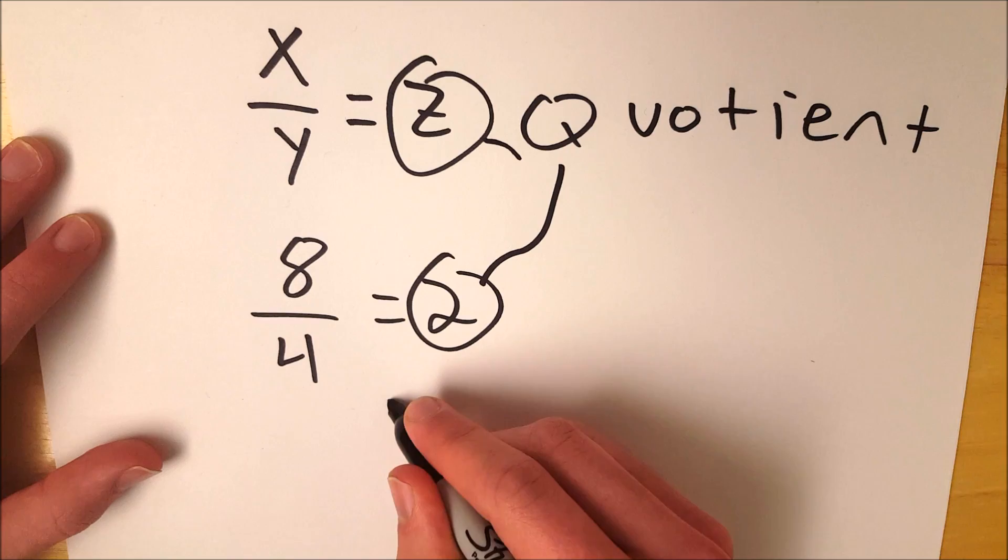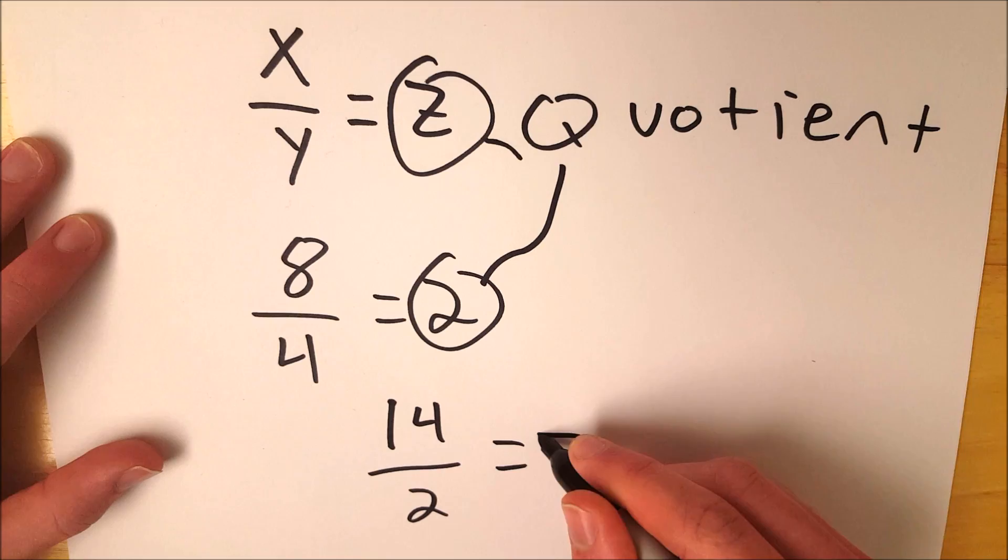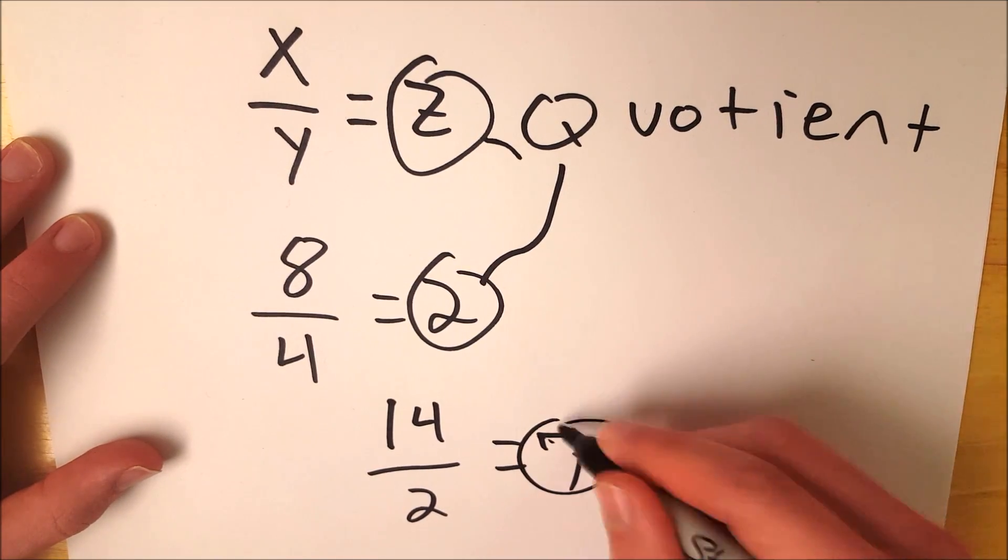And of course, if we divide, let's say, 14 by 2, that equals 7. 7 there, that's your quotient.